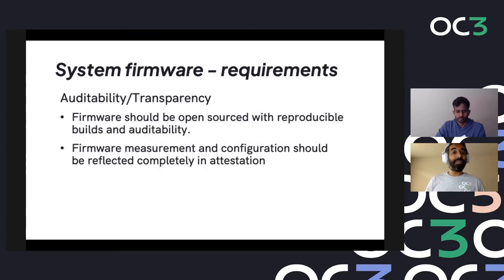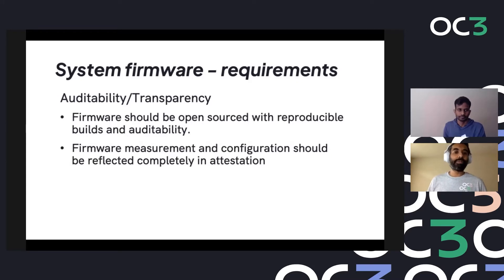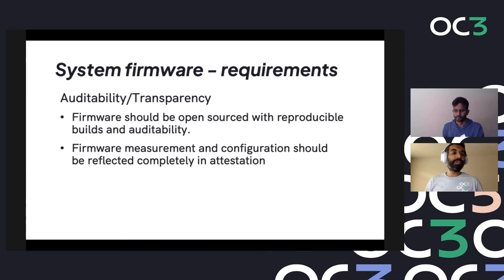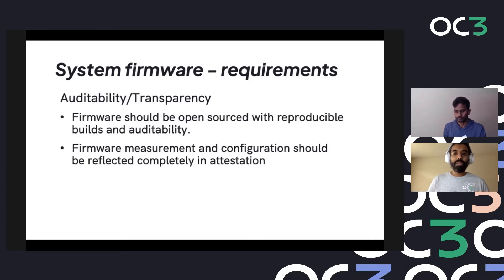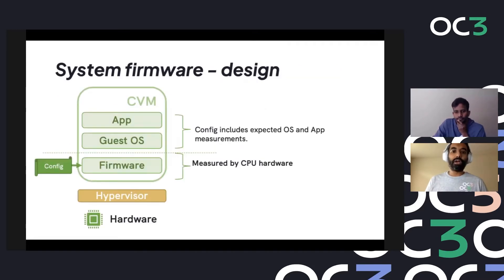Similarly, auditability and transparency: all firmware used in VMs and confidential VMs should ideally be open sourced with reproducible builds and a trail for auditability. Everything running as part of firmware and everything the firmware depends upon should be completely reflected in attestation. These need to be the core tenants around system firmware if we want notions of auditability and transparency for confidential VMs.